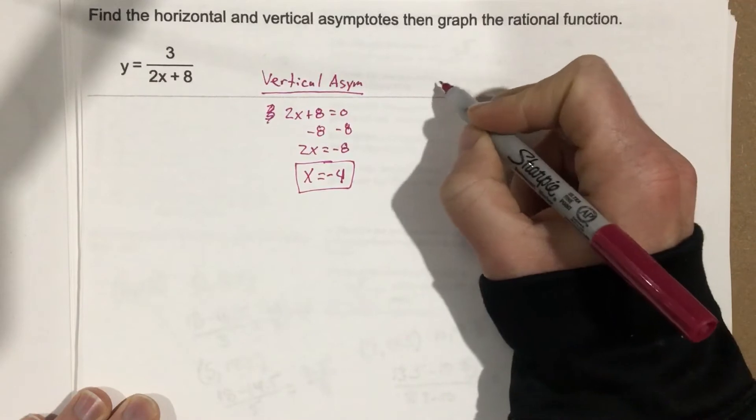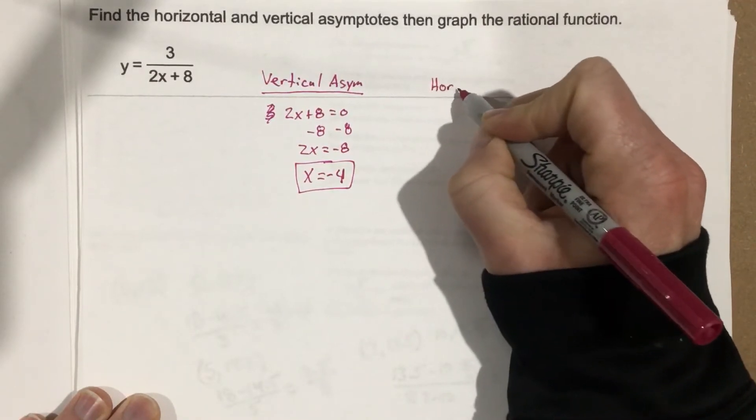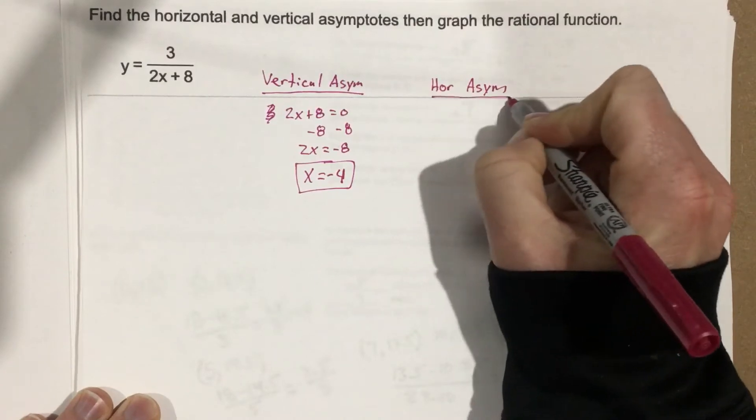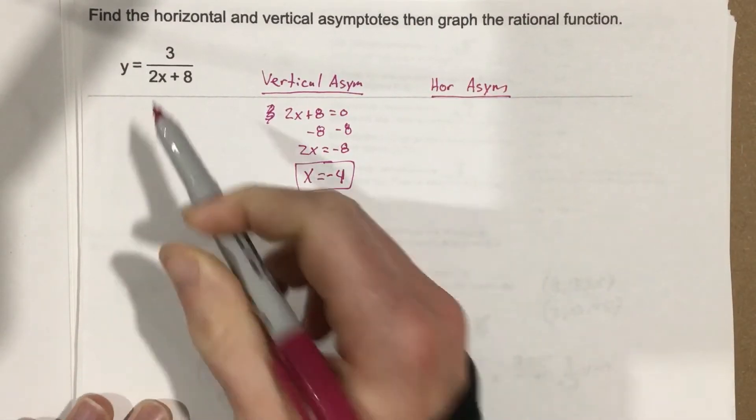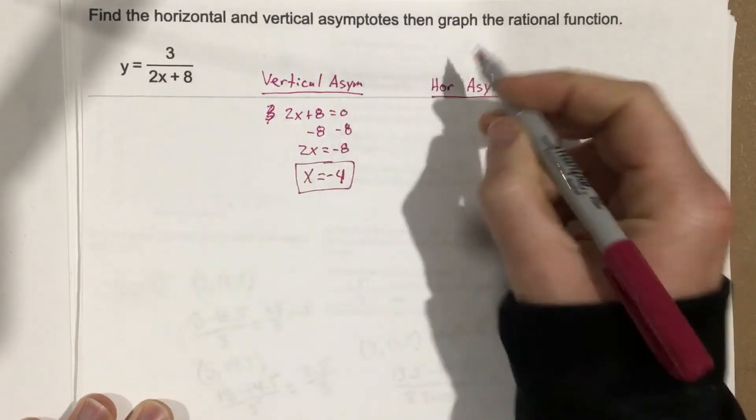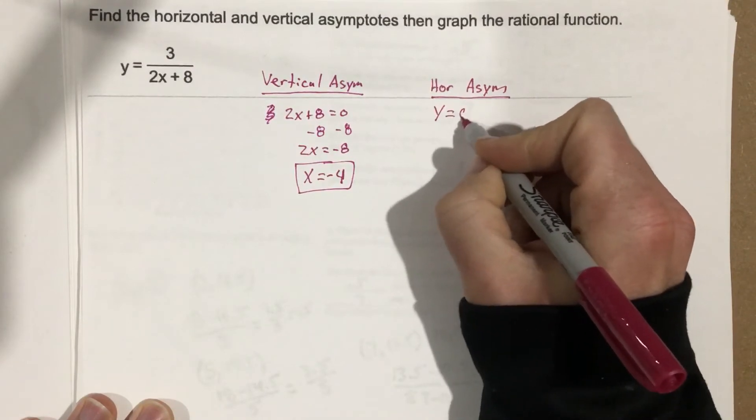Now the horizontal asymptote. Again we're going to look, is it bottom heavy, top heavy, or is it neutral? In this case it's bottom heavy. It's got the highest degree exponent in the bottom, which means automatically the horizontal asymptote is y equals 0.